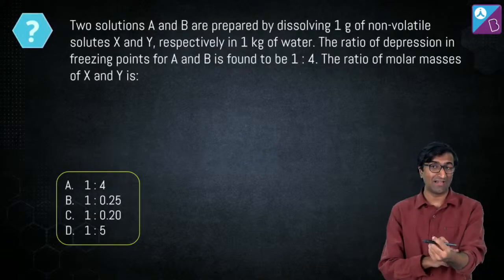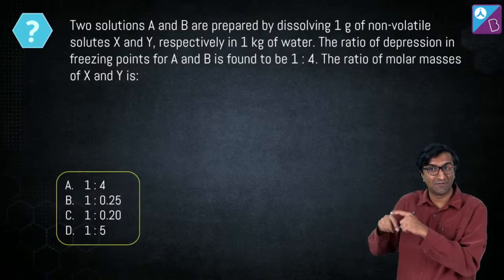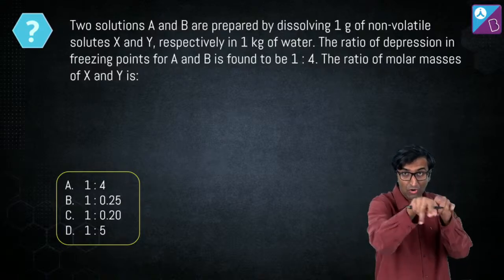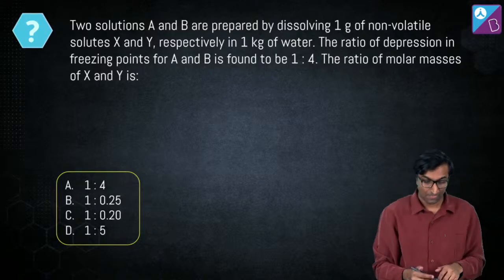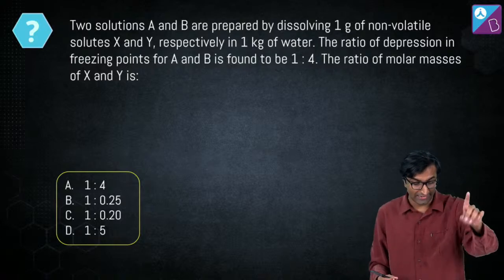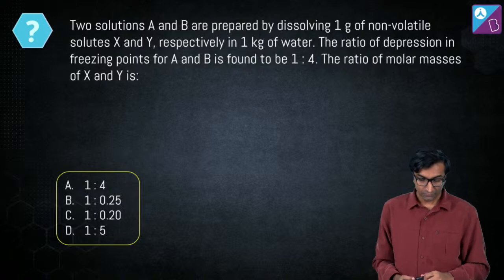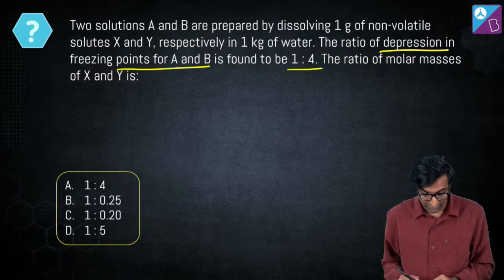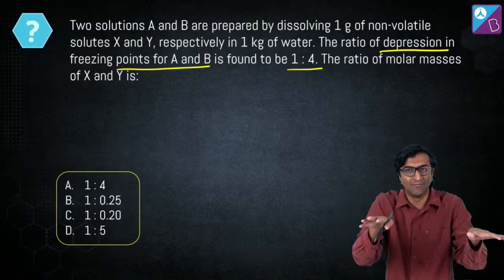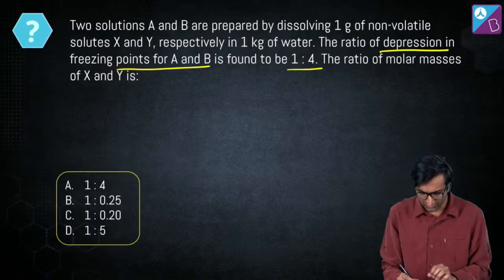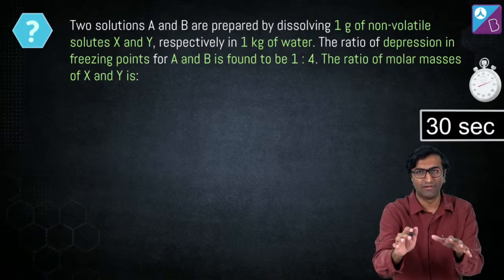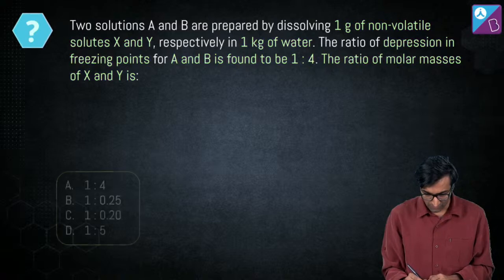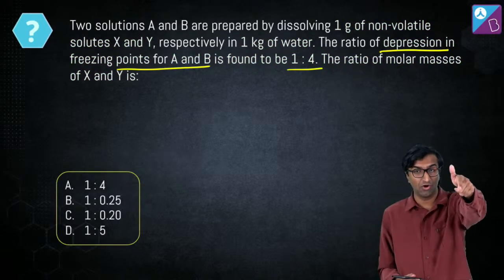Let's start with a straightforward question from a previous year paper. Two solutions A and B are prepared by dissolving one gram each of non-volatile solutes X and Y in one kg of water. The ratio of depression in freezing points for A and B is found to be 1:4. Find the ratio of molar masses of X and Y. I'll give you 30 seconds — give me your answer as A, B, C, or D.